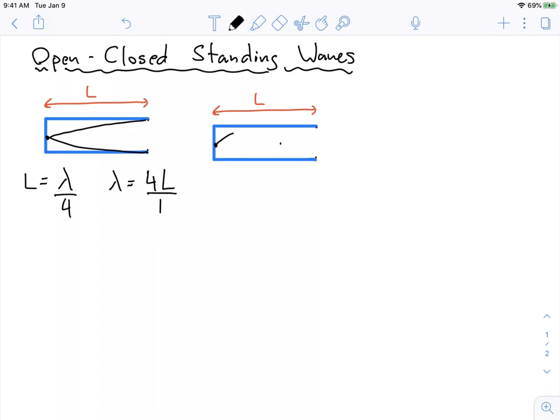So the next actual one looks like this. This is L equals three lambda over four, or lambda is equal to four L over three.